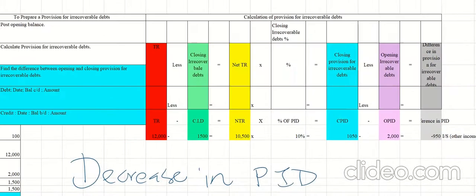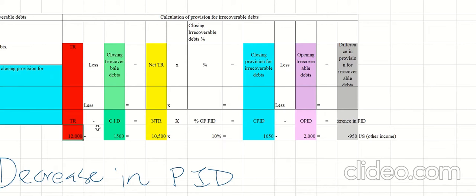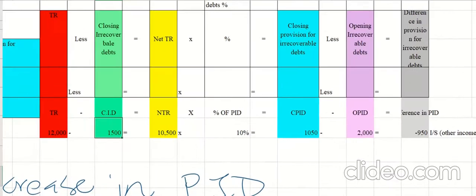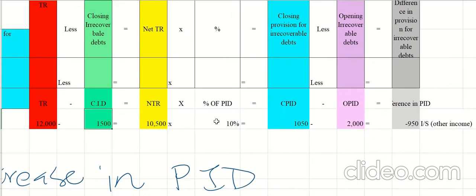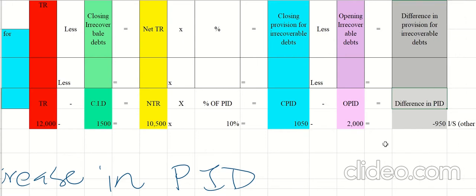There is also an easy formula to follow. Opening trade receivables 12,000, minus current year irrecoverable debts 1,500, gives net trade receivables of 10,500. Multiply by 10% to get the year-end provision of 1,050. Deduct the opening provision for irrecoverable debts of 2,000. If the result is negative, it goes to the income statement under other income. This formula is useful especially for multiple choice questions.